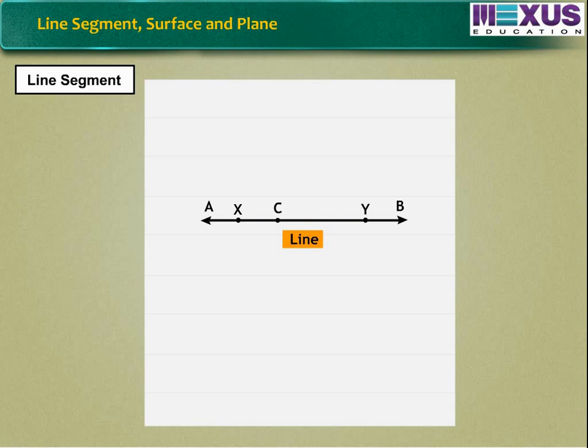Also, points C, D are on line segment XY other than X and Y and there are infinitely many points on the line segment, and we say it as points X and Y are the endpoints of line segment XY.